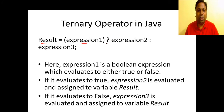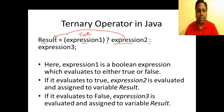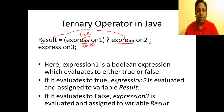How this works is: first, expression 1 will be evaluated. If this expression returns true, then expression 2 will be evaluated and that value will be assigned to the variable result. If expression 1 evaluates to false, then the value of expression 3 will be assigned to result.